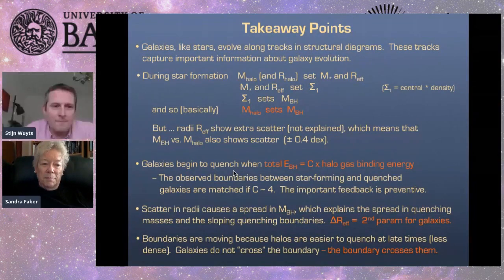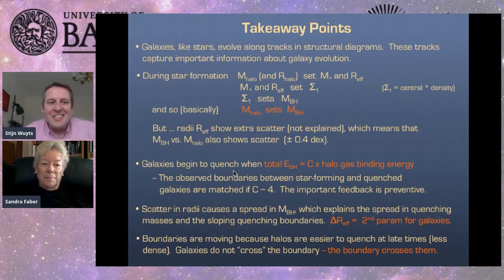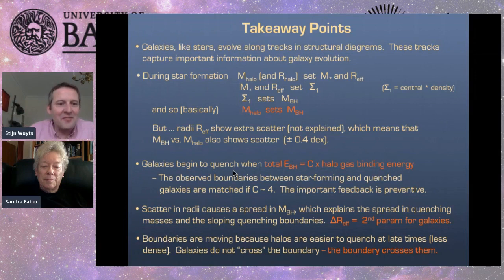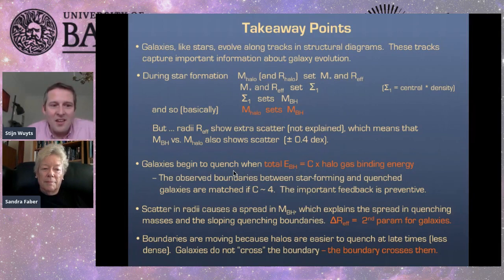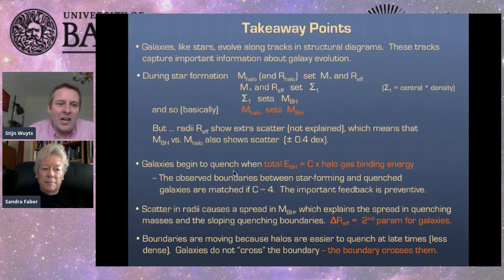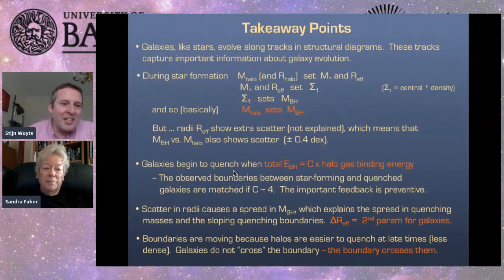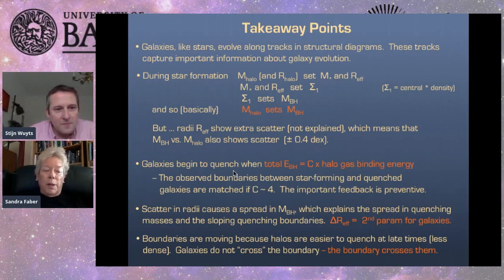Thank you very much, Sandy, for a wonderful talk, and for giving it so early in the morning in California. It's great to see this synthesis coming together from scaling relations as a function of redshift on galaxy structure, coupled with local black hole scaling relations. While we receive questions from the audience, I wondered: does your work have implications for how the M-sigma relation would evolve with redshift, or does it assume this to be universal in time? And empirically, where do we stand in measuring that in an unbiased way?